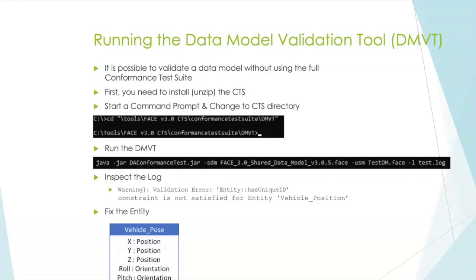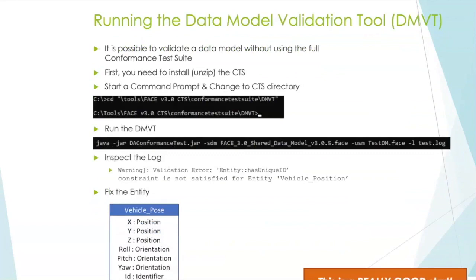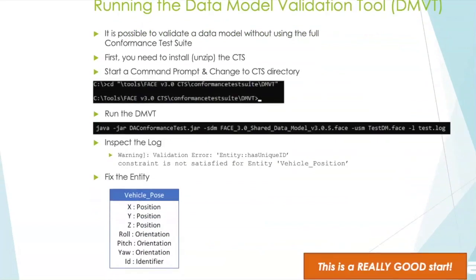What we find from the example is we get an error that our entity does not satisfy the has unique ID constraint. Then we'll go back and fix the entity. If I scroll down, we can add identifier, and now we've run this back through the DMVT, and it's going to pass for us.